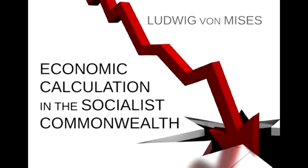That this is only possible in very simple conditions is obvious. In the case of more complicated and more lengthy processes of production, it will plainly not answer. In an exchange economy, the objective exchange value of commodities enters as the unit of economic calculation. This entails a threefold advantage. In the first place, it renders it possible to base the calculation upon the valuations of all participants in trade. The subjective use value of each is not immediately comparable as a purely individual phenomenon with the subjective use value of other men. It only becomes so in exchange value, which arises out of the interplay of the subjective valuations of all who take part in exchange.